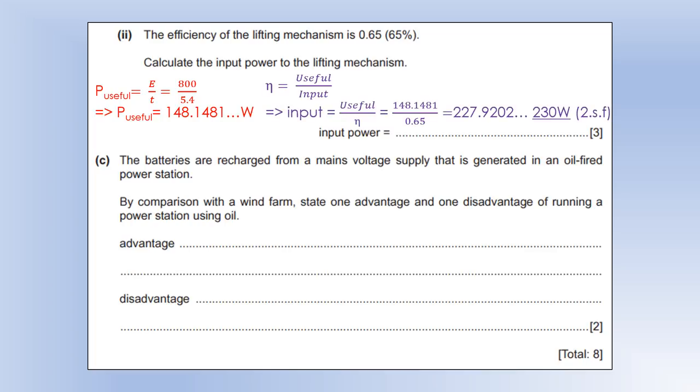So what we're going to do is we're going to take our power, divide by 0.65 and that will give us the actual power we would have to put in, and that would be 230 to 2 significant figures.